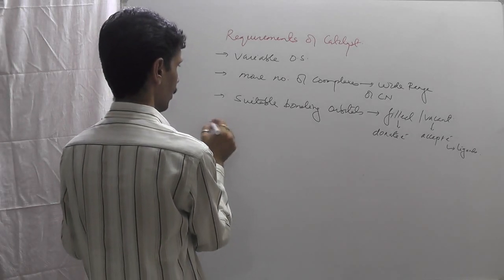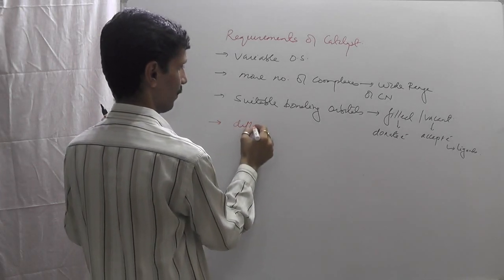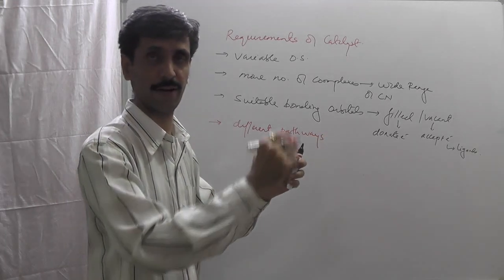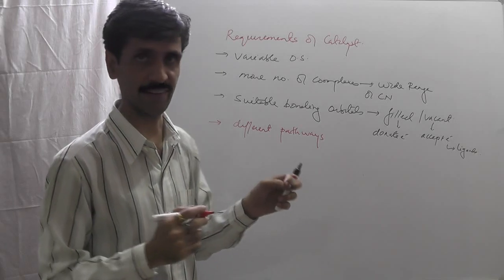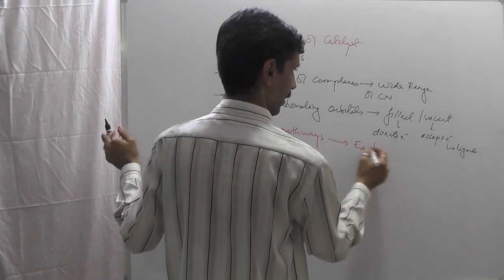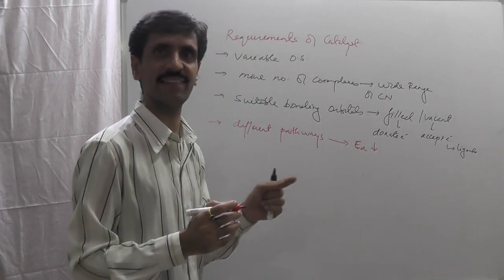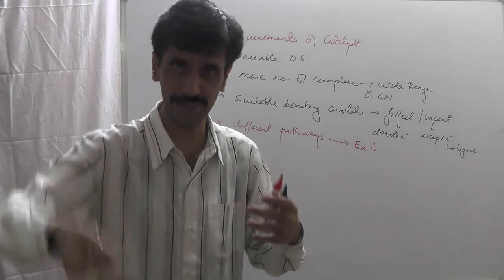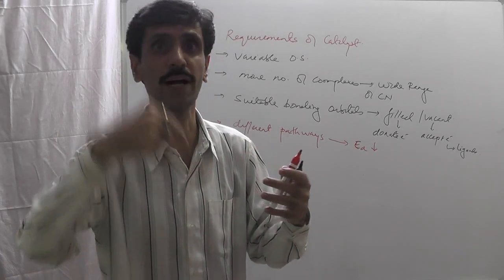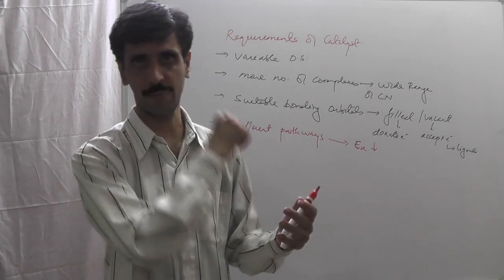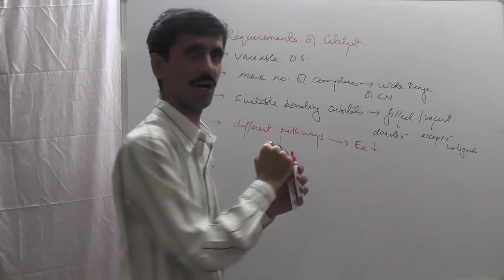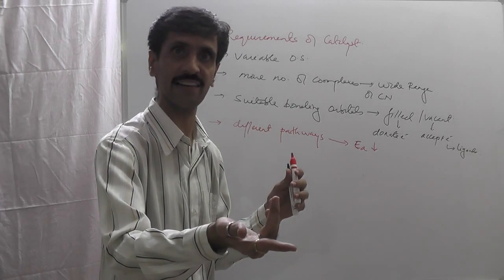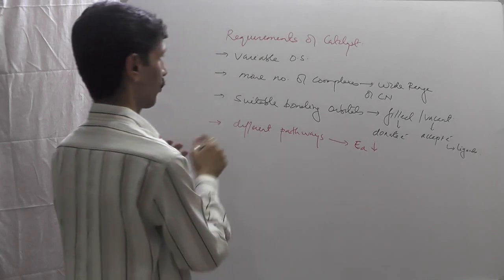The next requirement is it should have different pathways — the catalyst should offer different pathways, meaning different routes for the reactants to get converted into products, such that the energy of activation is minimized. The lower the energy of activation, the greater the number of reactant molecules that — upon collision — undergo effective collisions and get converted into products. This is based on the collision theory of chemical kinetics. So lower activation energy means more reactant molecules are involved, and the rate of reaction increases.